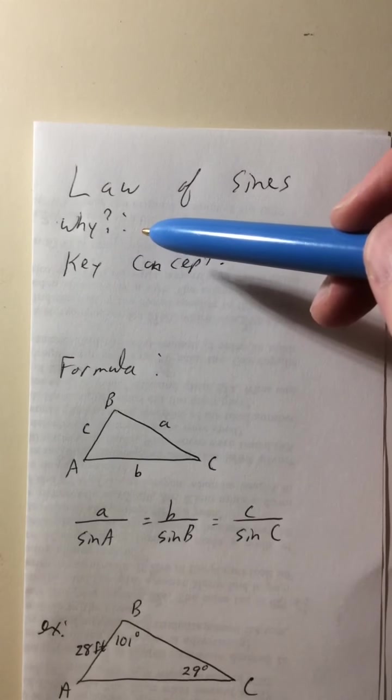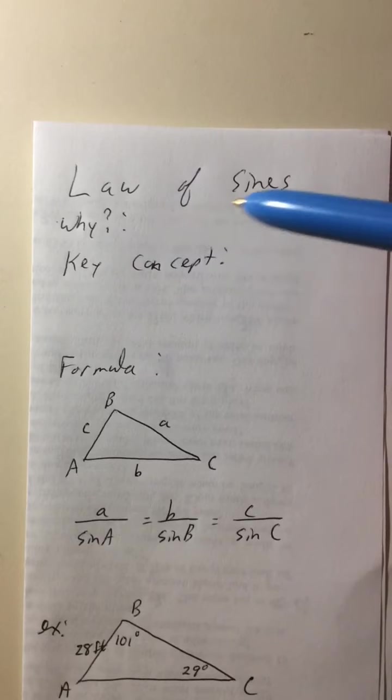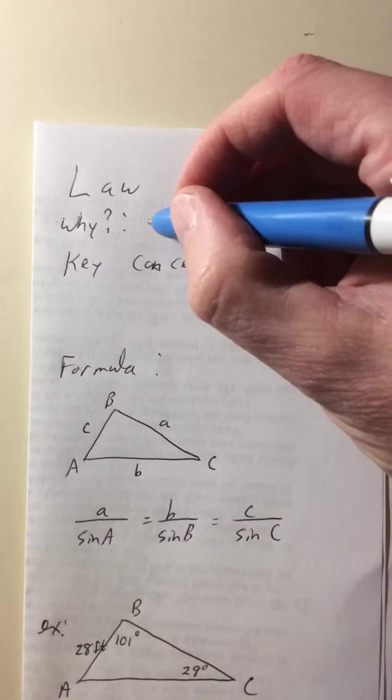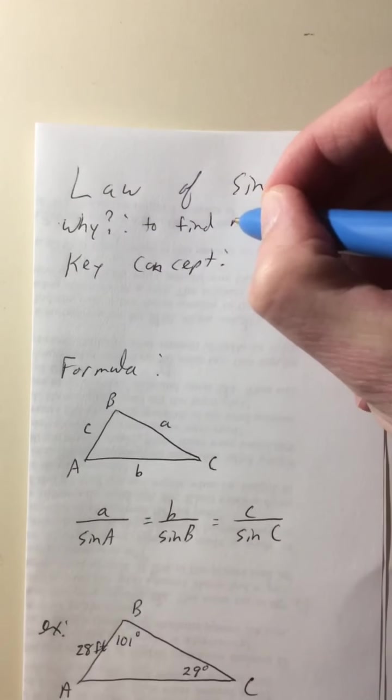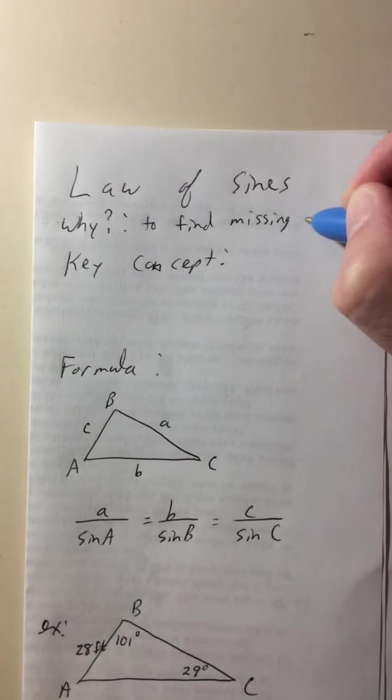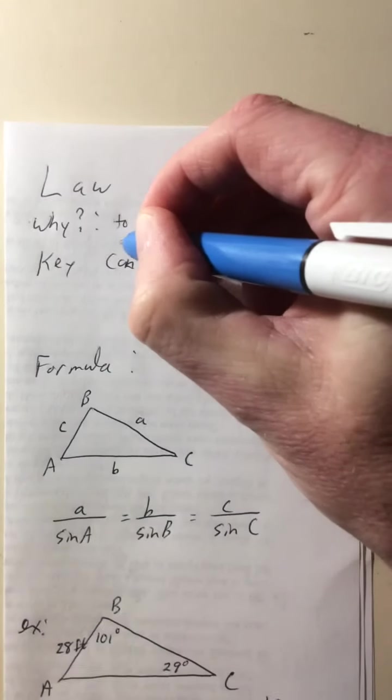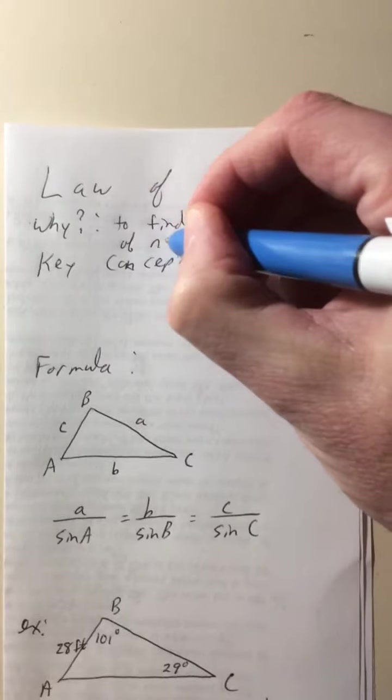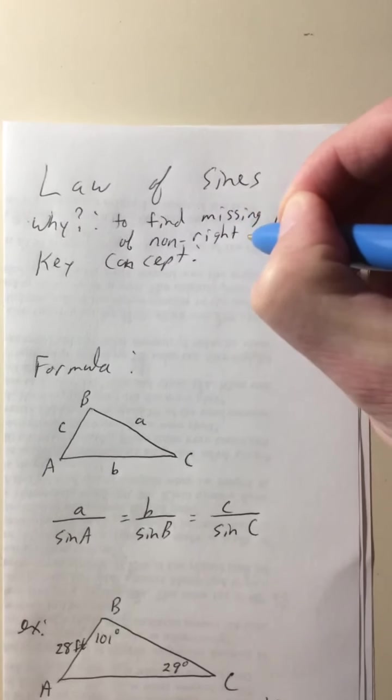So we need some other method to help us to find missing sides and angles of triangles that are not right triangles. So that's why we have the law of sines. It enables us to find missing pieces of non-right triangles, aka sides and angles, missing pieces of non-right triangles.